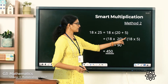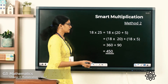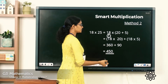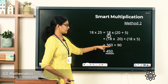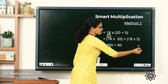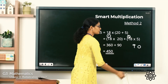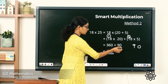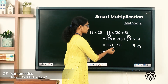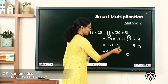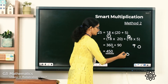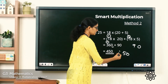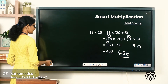We are going to open the bracket: 18 into (20 plus 5). You have to multiply 18 with each of the addends inside the brackets. So it's 18 into 20 plus 18 into 5. What is 18 into 20? Write the 0 first. 2 eights are 16, carryover 1; 2 into 1 is 2, plus 1 is 3. So 18 into 20 is 360. And 18 into 5: 8 fives are 40, carryover 1; 5 into 1 is 5, plus 4 is 9. So 18 into 5 is 90. Now 360 plus 90: 0 ones plus 0 ones is 0; 9 tens plus 6 tens is 15, write 5 and carryover 1; 3 hundreds plus 1 is 4. So the product is 450.